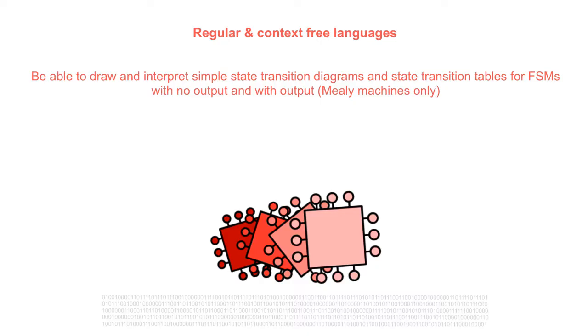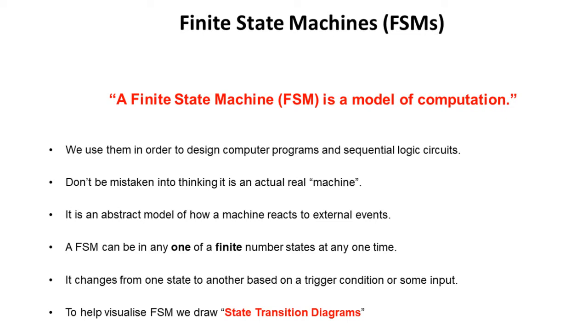In this video we're going to look at how you can draw and interpret simple state transition diagrams and state transition tables for finite state machines with no output and with output. A finite state machine is a model of computation.